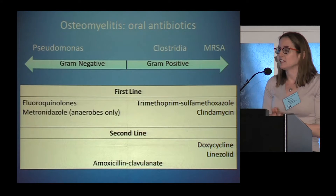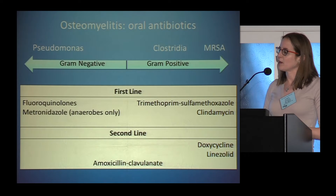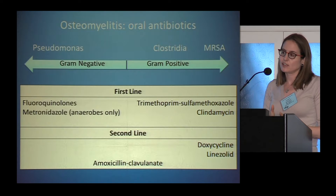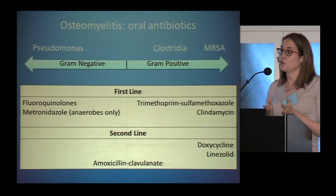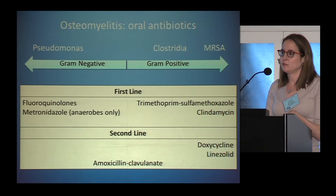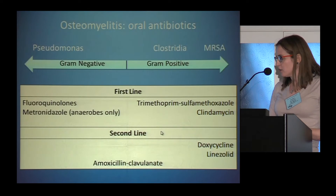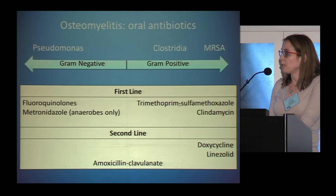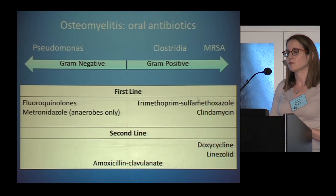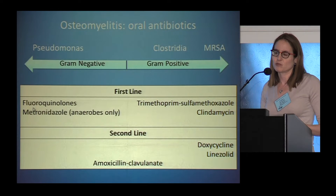I often prefer oral antibiotics because they give flexibility. First-line agents are tried-and-true with good bioavailability and bone penetration. For gram-positives — specifically MRSA — Bactrim and clindamycin are your go-tos. At our hospital we tend to have better susceptibilities to Bactrim, so we use it as first-line. For gram-negatives, the agents with very good bone penetration are fluoroquinolones. Metronidazole also has good bone penetration but only covers anaerobes.